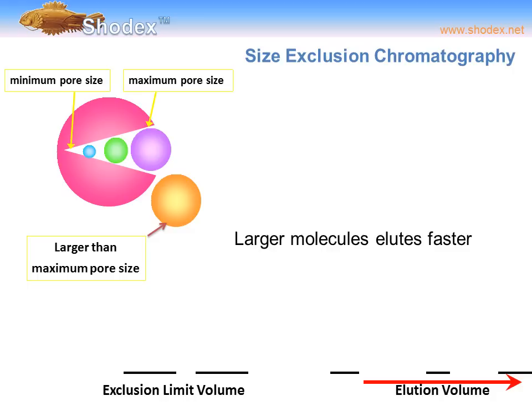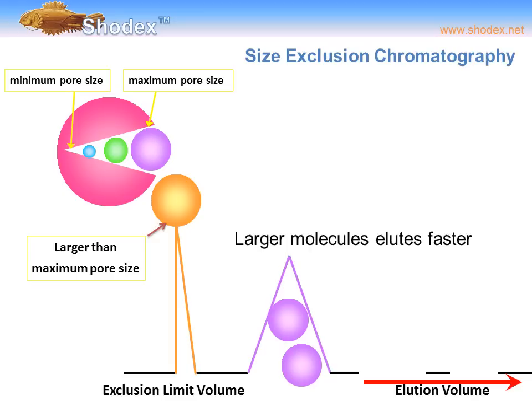For analytes that are very large — too large to penetrate the particle at all — those analytes will elute very quickly through the column. We call this the exclusion limit volume, or exclusion limit for the particle. So the gold sphere, for example, will elute very early in the chromatogram, and we cannot get specific size information or good separation for that analyte.